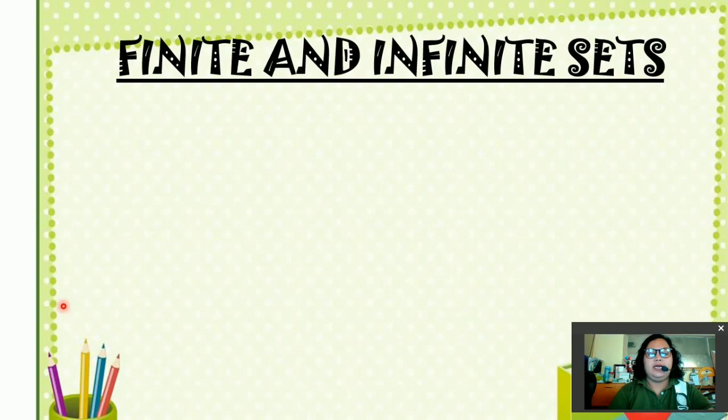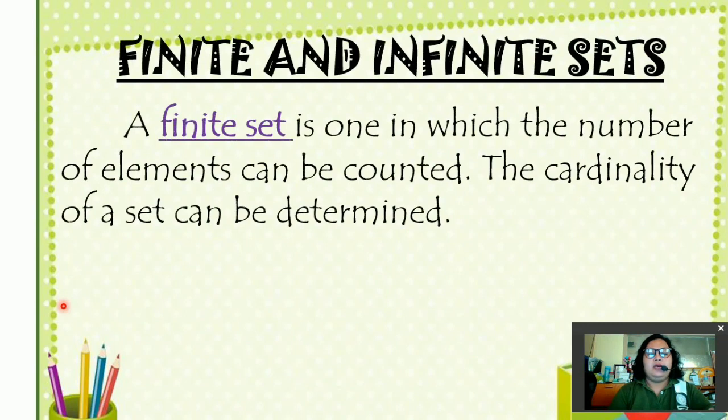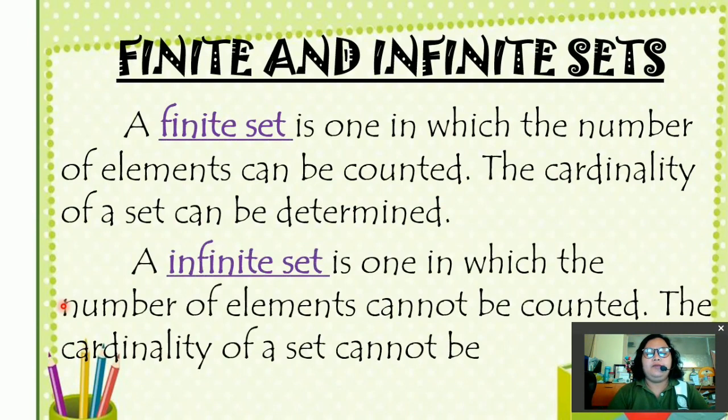Finite and infinite sets. A finite set is one in which the number of elements can be counted. The cardinality of a set can be determined. An infinite set is one in which the number of elements cannot be counted. The cardinality of a set cannot be determined.